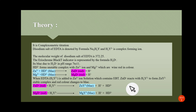HD²⁻ forms an unstable complex with Zn²⁺ ion and Mg²⁺ ion which are wine red in color. This is shown in the reaction. When Zn²⁺ reacts with the indicator, it forms a complex of zinc and indicator having wine red color by replacement of H⁺. The same applies in the case of magnesium.